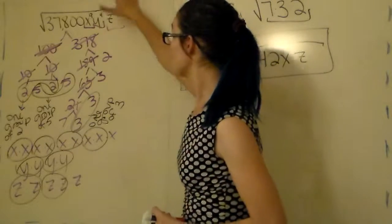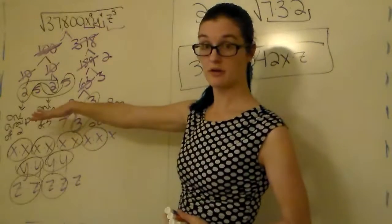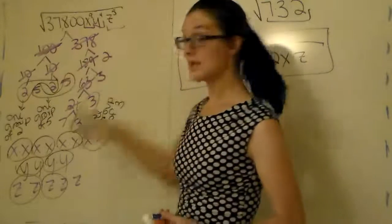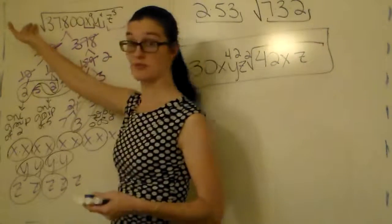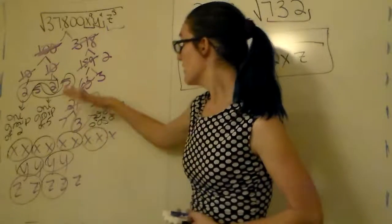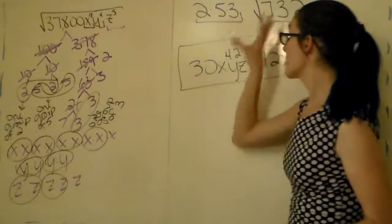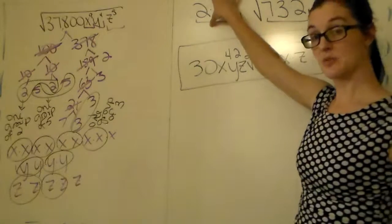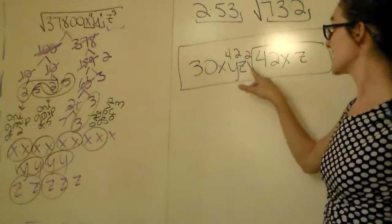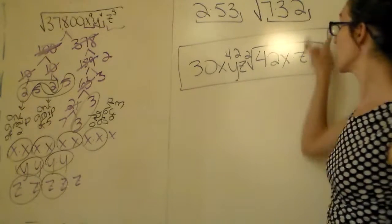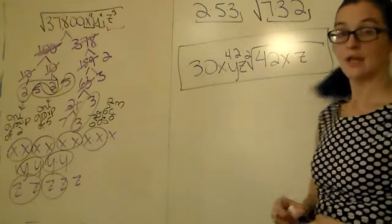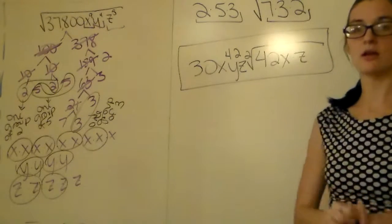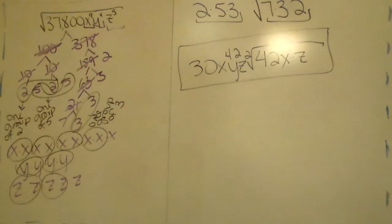So to summarize: prime factorize your number, figure out how many groups you can have based on your index — remember, the index is what type of root you have — and do the same for variables. Everything outside of the house gets multiplied together, that gets multiplied by your radical symbol, and everything left inside gets multiplied together as well. Any questions, comment, email, whatever you need.